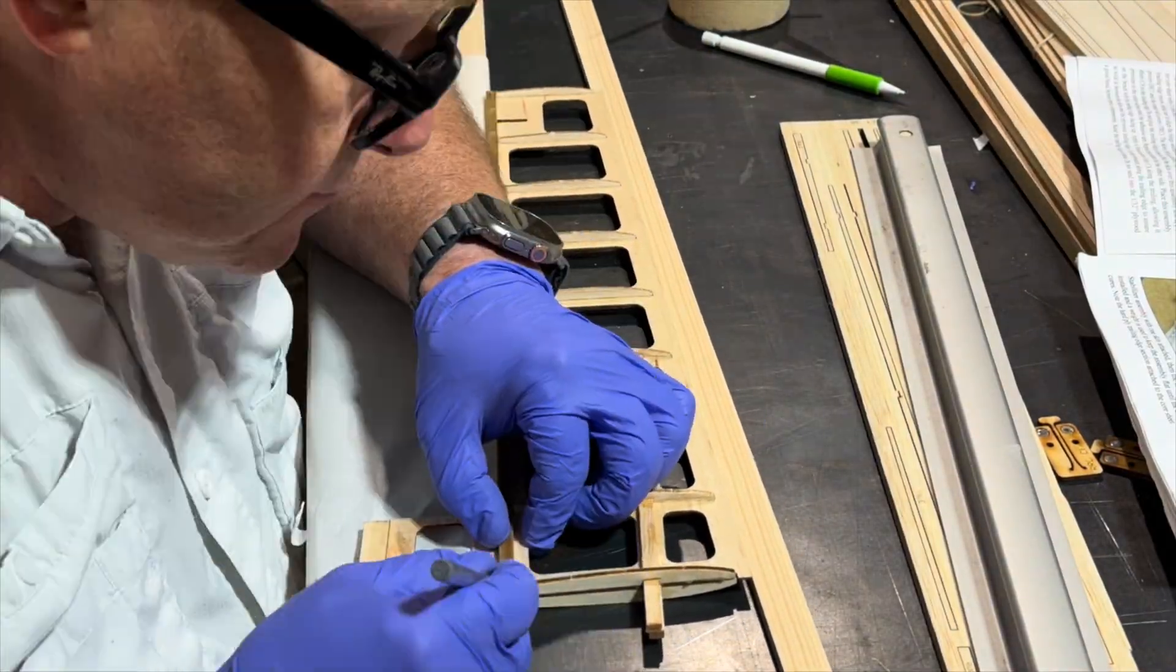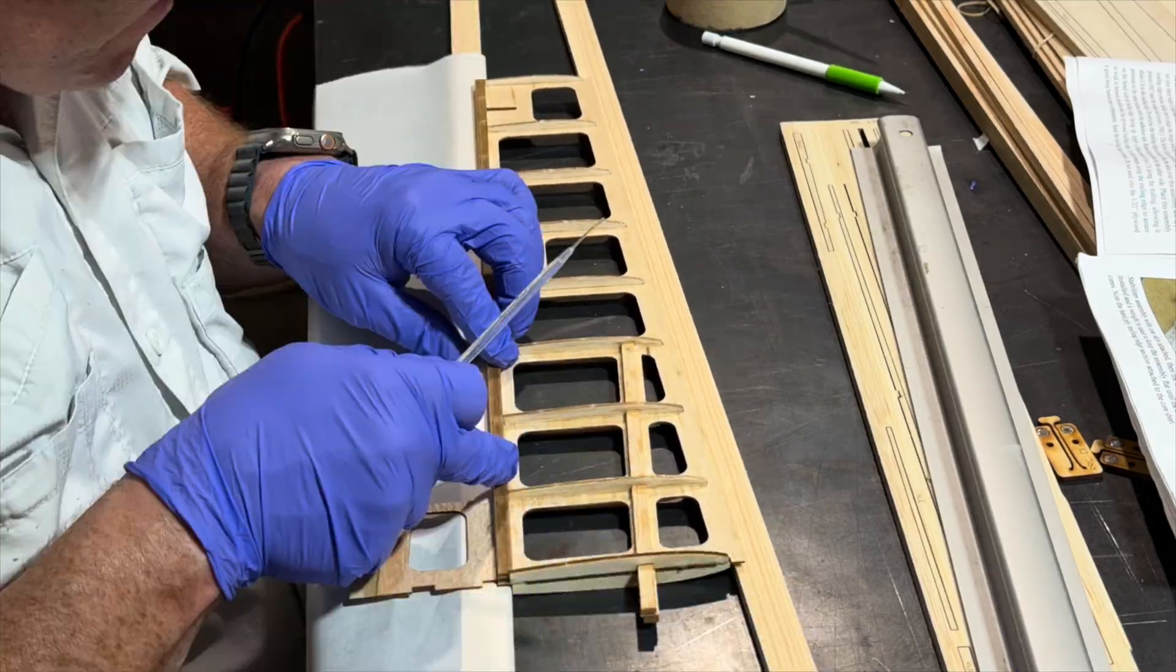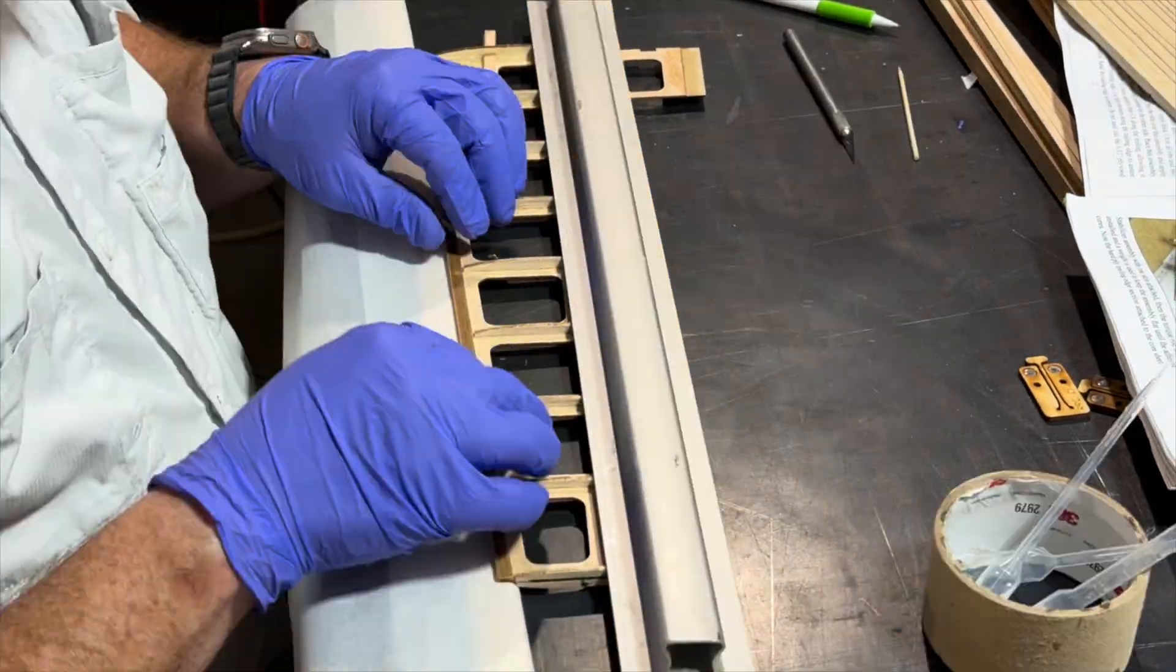So in this part of the video, we're going through, we're actually gluing on the trailing edge. And you'll notice that there are two quarter-inch pieces of wood.